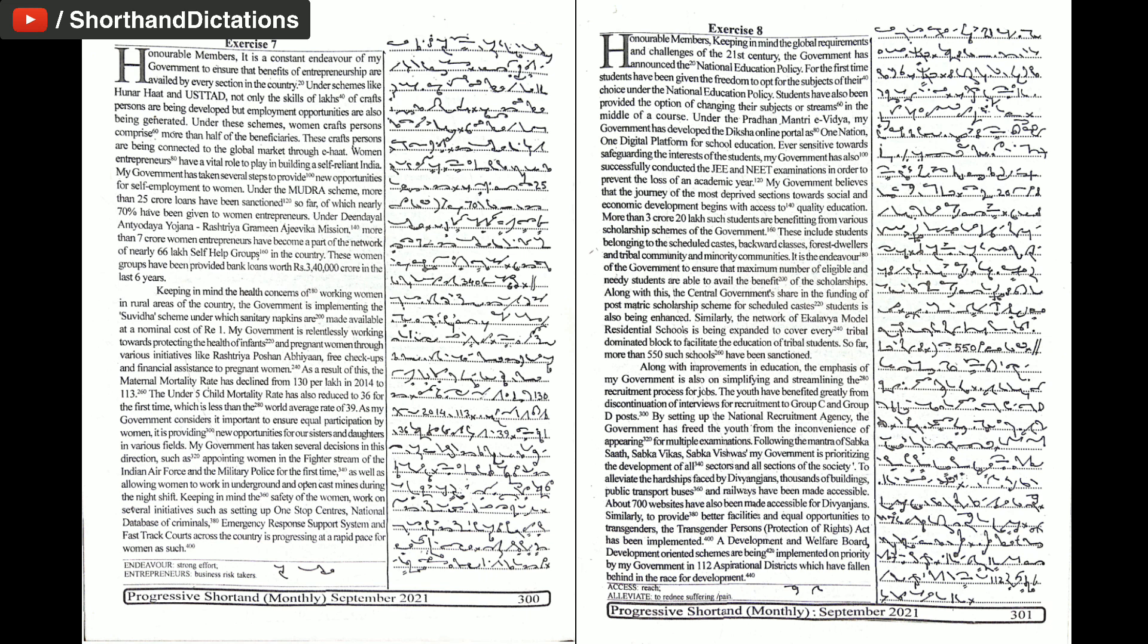My government is relentlessly working towards protecting the health of infants and pregnant women through various initiatives like Rashtriya Poshan Abhyan, free check-ups and financial assistance to pregnant women. As a result of this, the maternal mortality rate has declined from 130 per lakh in 2014 to 113. The under-5 child mortality rate has also reduced to 36 for the first time, which is less than the world average rate of 39.